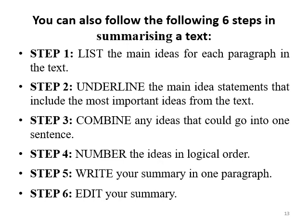Step three: combine ideas that could go into one sentence. When summarizing, combine key ideas to avoid being unnecessarily wordy and to be concise and precise. Step four: number the ideas in logical order — one leading to the other. This is what we use the literary term 'plotting' for: arrange your ideas sequentially from beginning to end, one leading to another, following the flow of the paragraphs in the main text. Step five: write your summary in one paragraph, as you are asked to do. Step six: edit — a very good writer is also a good editor. Review your summary carefully before finalizing.